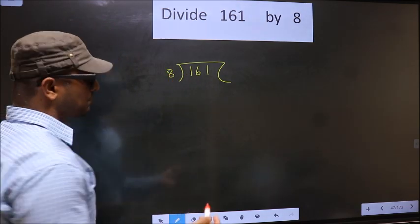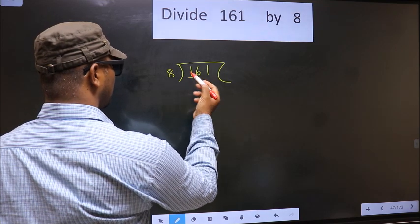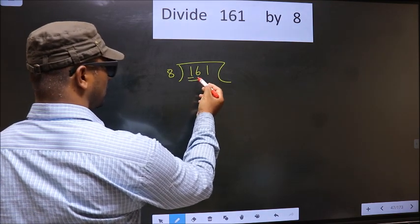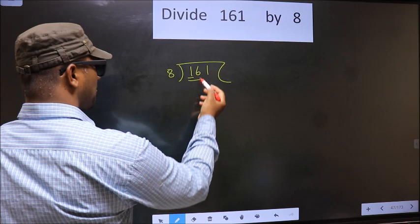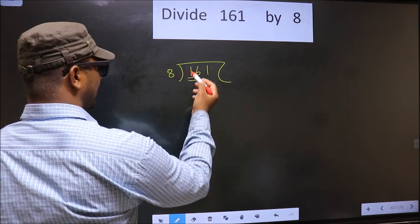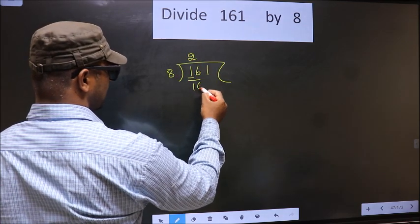Next. Now here we have 1. 1 is smaller than 8, so we take 2 numbers, that is 16. When do we get 16 in the 8 table? 8 times 2 is 16.